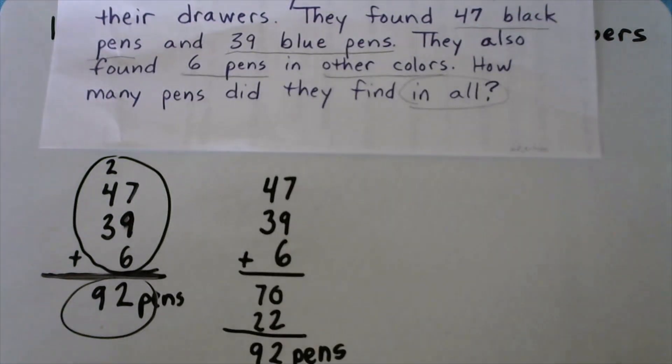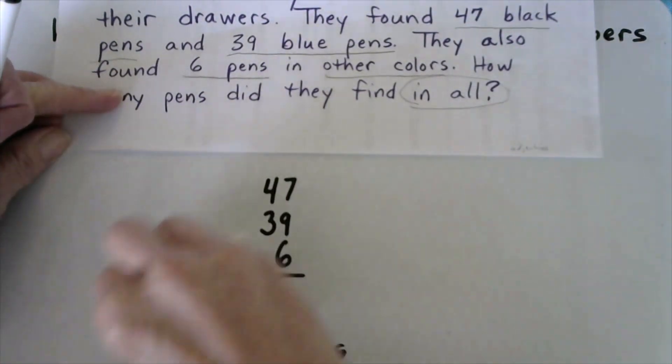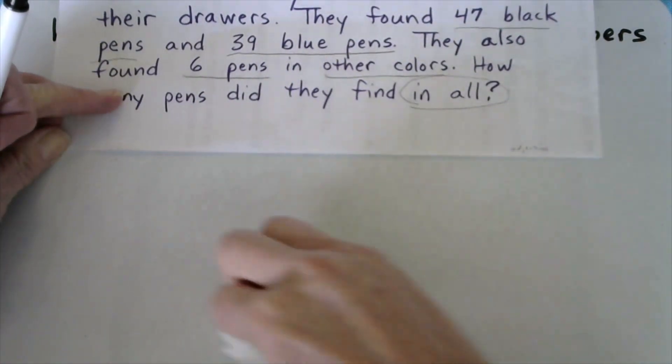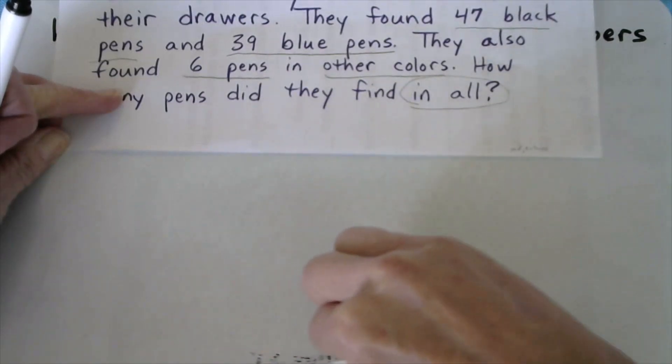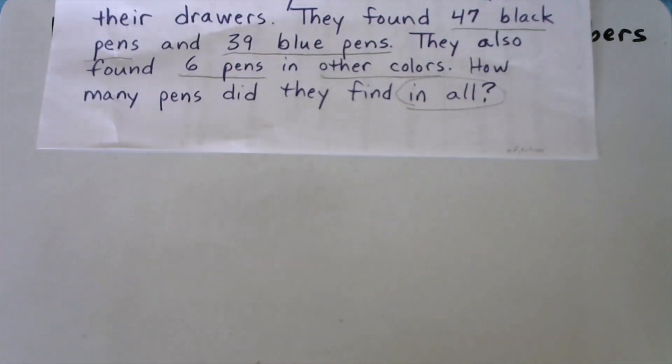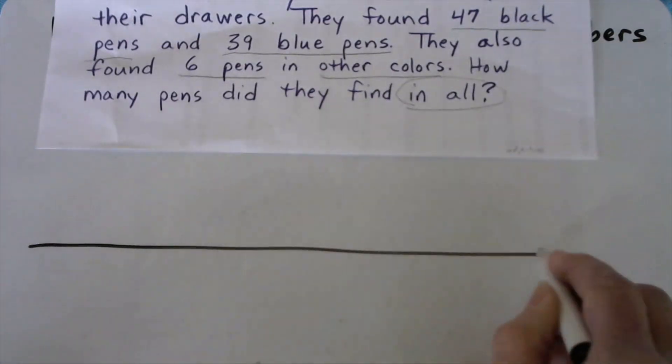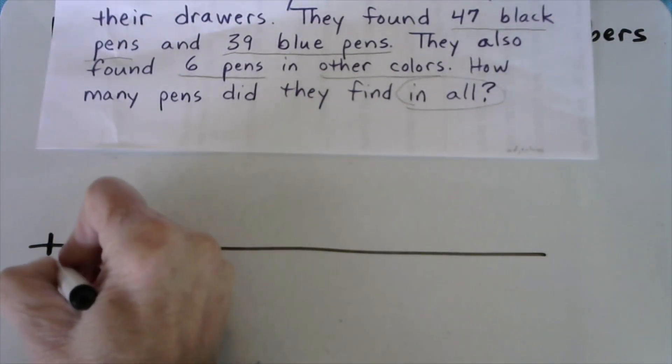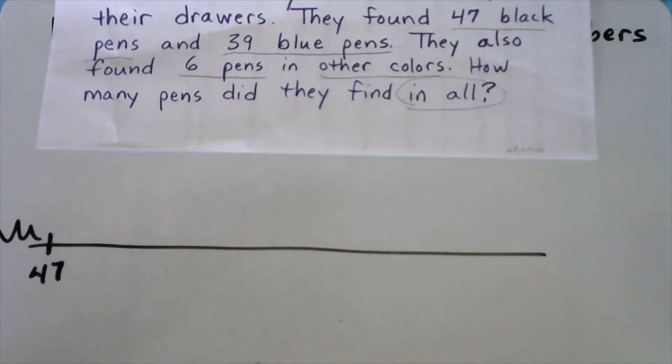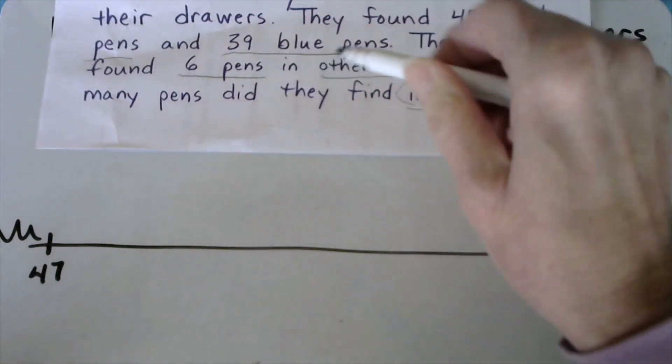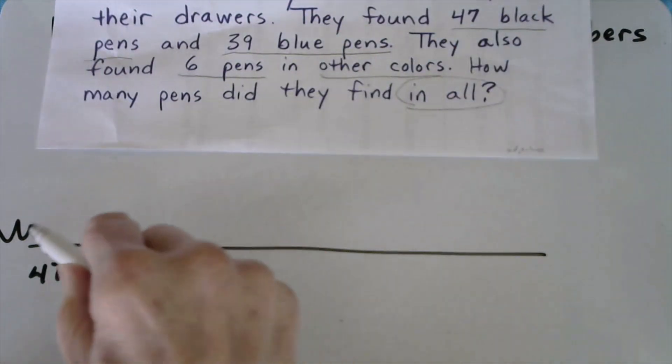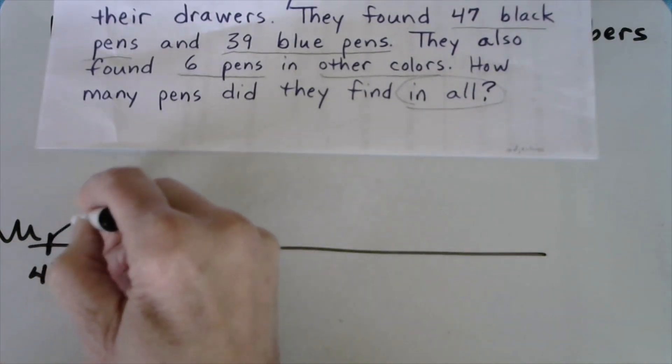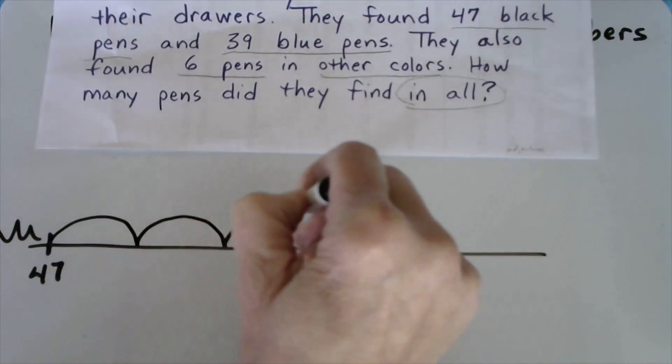And then, though there are other ways you could do it, I'm going to do, last but not least, some of you may have chosen an open number line. If you chose an open number line, most likely you started on 47, and you didn't have to write all these numbers because you know what's inside 47. And then I know I need to jump 39 for my blue pens. So I'm going to go ahead and jump 30, 47, 57, 67, 77, and each of these was a jump of 10.